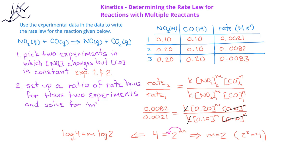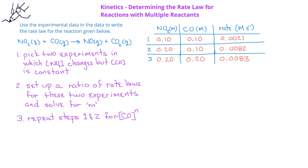We then isolate the exponent m, so we have log of 4 divided by log of 2 equals m. When we enter those values in a calculator, we see that the value of m is 2. We now want to repeat this procedure for two experiments in which the NO2 concentration is constant but the CO concentration changes. This situation can be found in experiments 2 and 3.